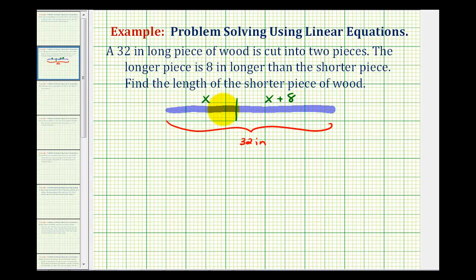But now with this information we can write an equation. We know if we add these two lengths together it must be thirty-two inches. So we can write the equation x plus x plus eight must equal thirty-two.